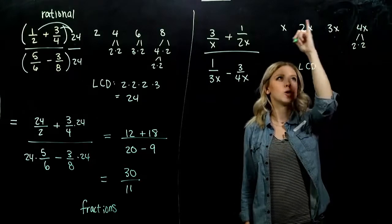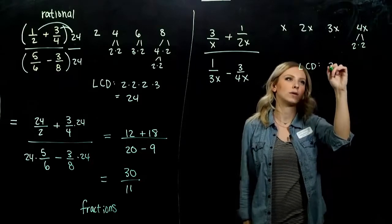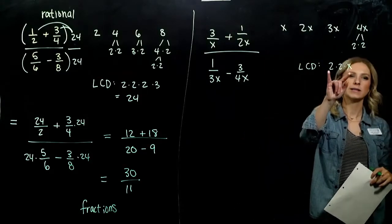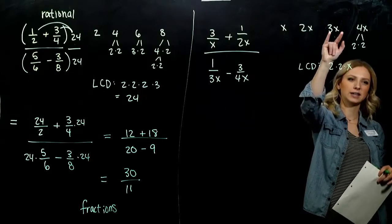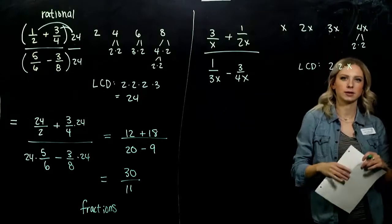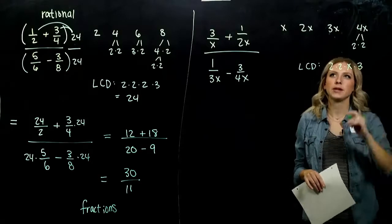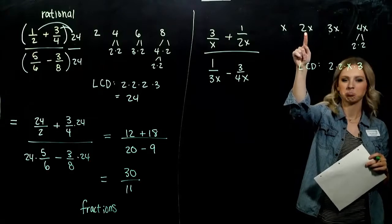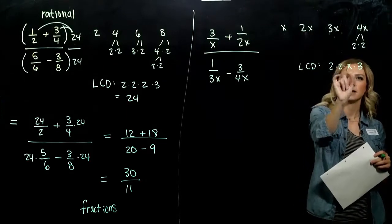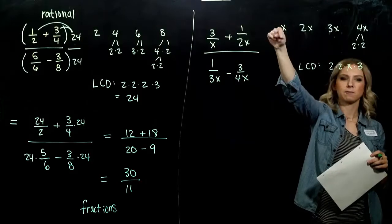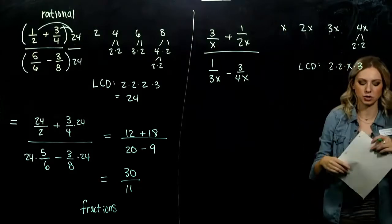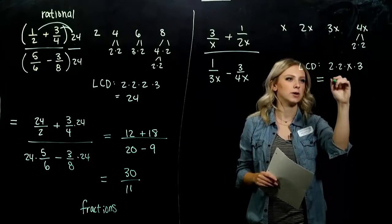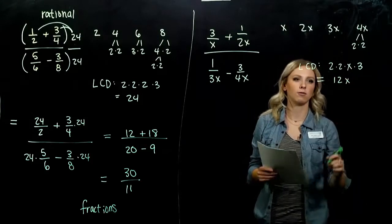We want the least common denominator between all of these. Starting with 4x, what is our LCD missing that 3x has? A factor of 3. Checking 2x — we've already taken into account both factors. Checking x — already taken into account. So our LCD is 4 times 3 times x, which gives us 12x.